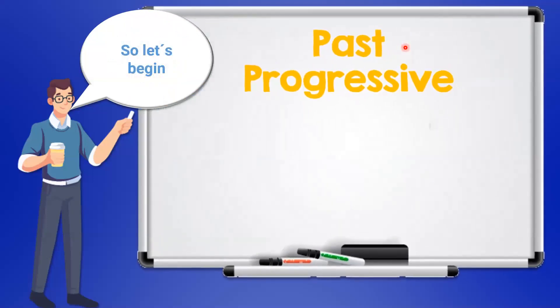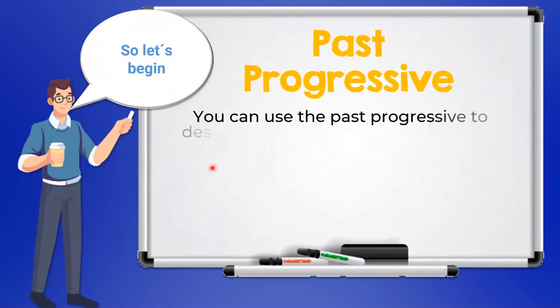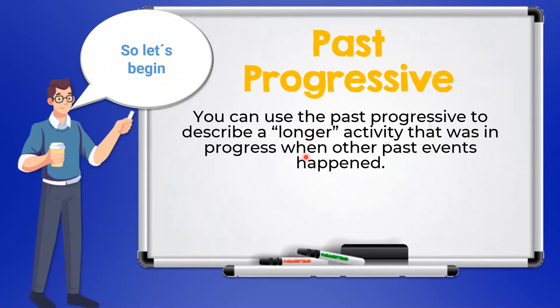So let's begin. You can use the past progressive to describe a longer activity that was in progress when other past events happened.